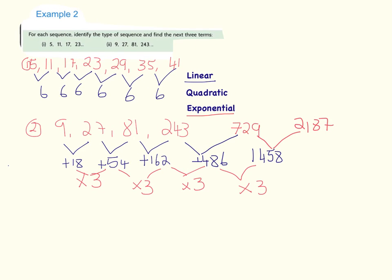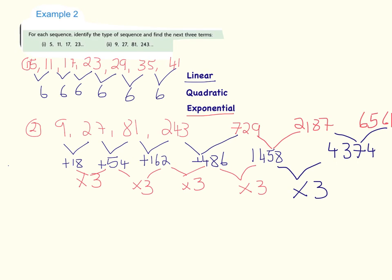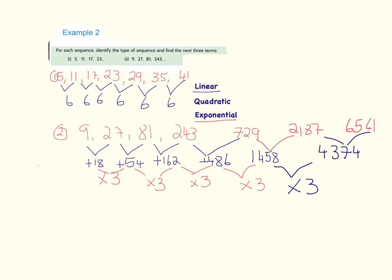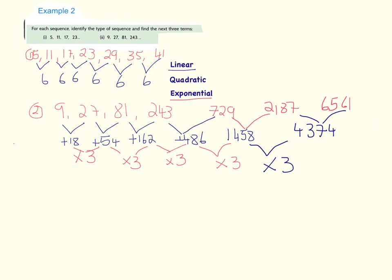For the third new term, 1458 times 3 gives 4374, and 2187 plus 4374 gives 6561. So the next three terms are 729, 2187, and 6561. You can see with an exponential sequence they get big really quickly — we started at 9 and within seven terms we're up at 6561. Exponential sequences grow very rapidly, and that's another way to spot an exponential pattern.